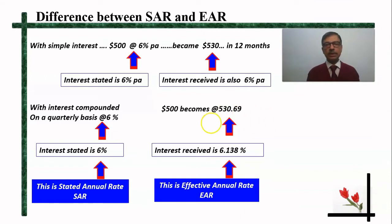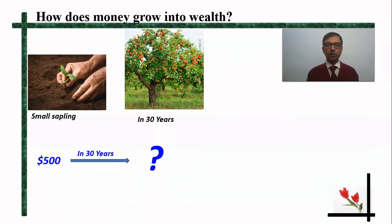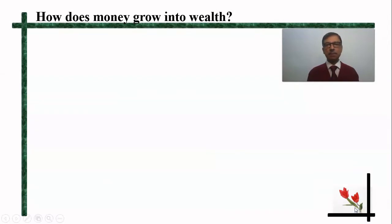Now this $30 or $30.69 over a period of one year may appear very small or insignificant. But consider a long-term duration of about 30 years. In a period of 30 years, a sapling would become a full-fledged tree bearing fruits. So what will happen to that $500 over 30 years? Let us take some practical examples of how money gets converted and grows into wealth.